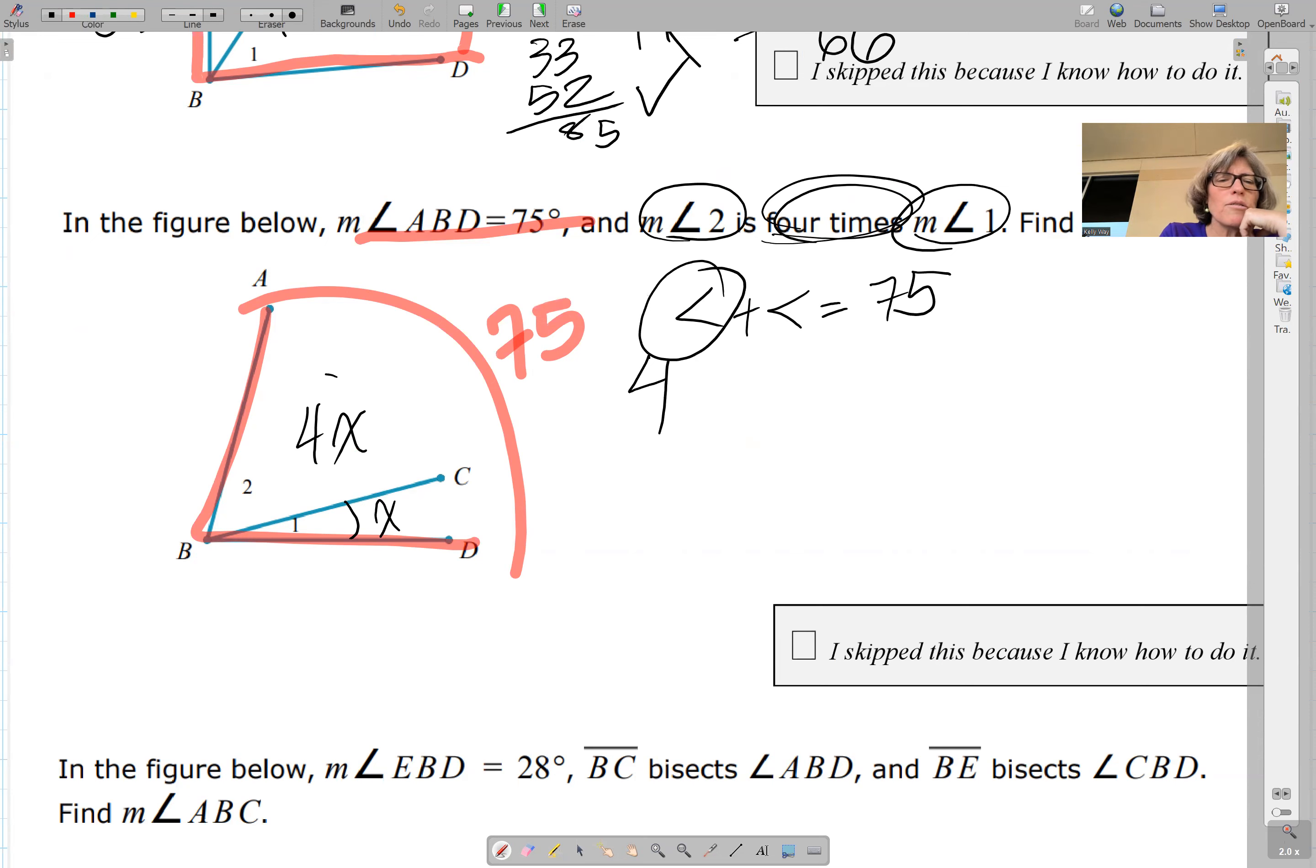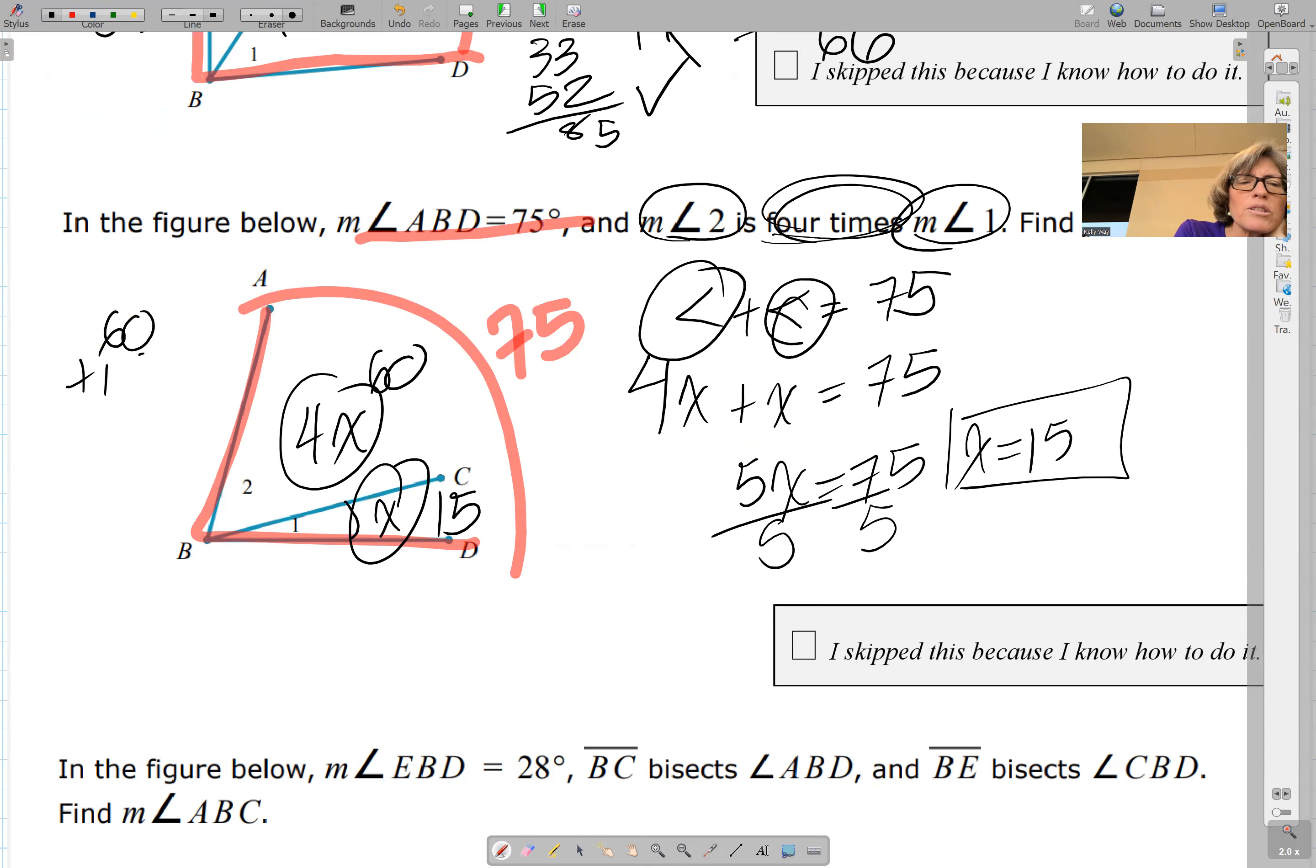So your thing equation is angle plus angle equals 75 here. Circle plug chug. 4x plus x equals 75. 5x equals 75, divide by 5 and x equals 15. Don't stop there. We're going to plug it in and check it out. So that means this is 15, 4 times 15 is 60, 60 plus 15, boom, 75. Check.